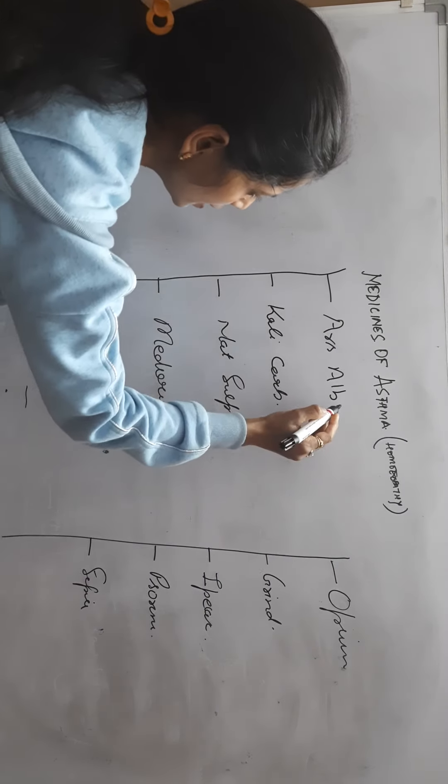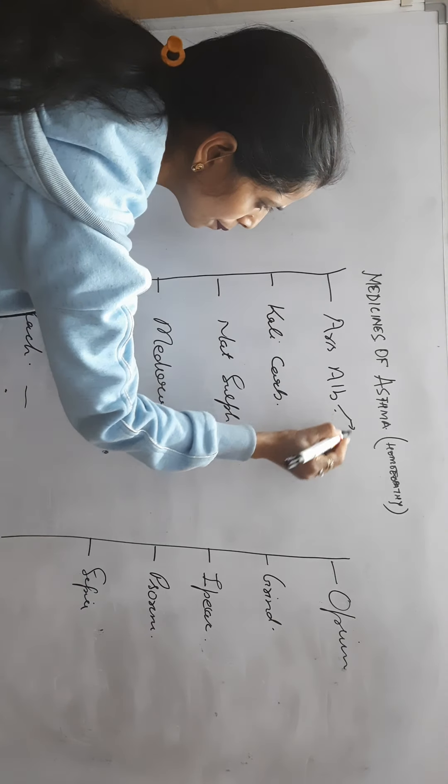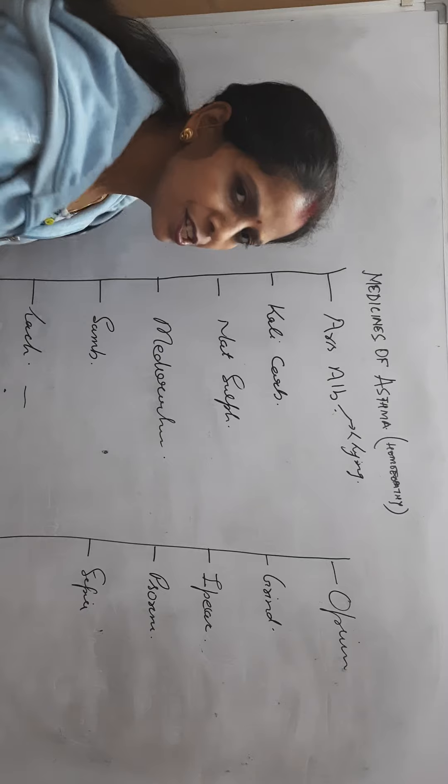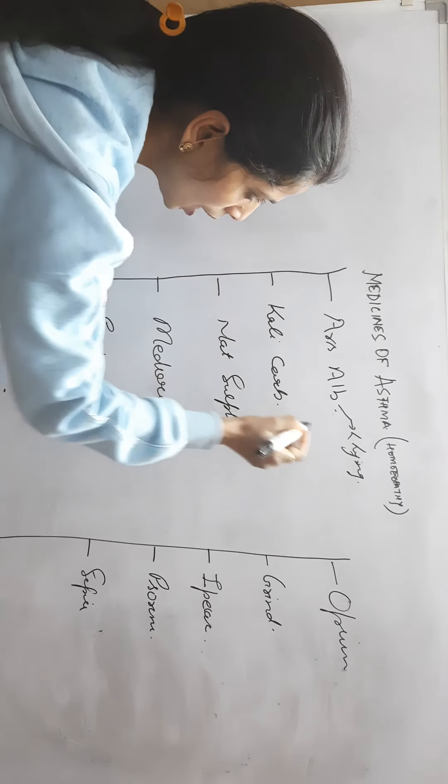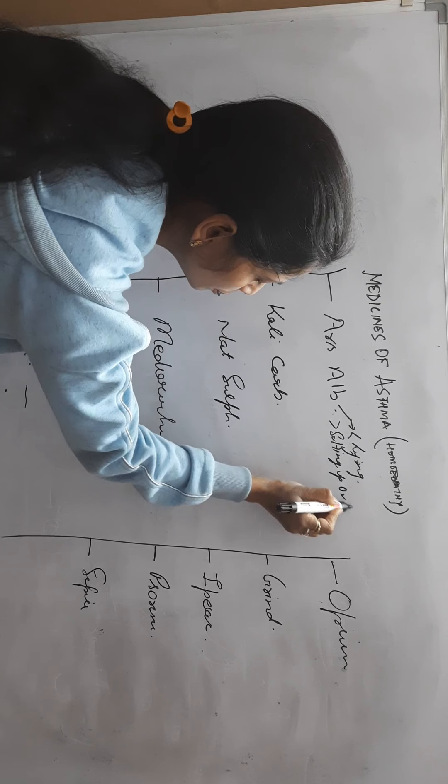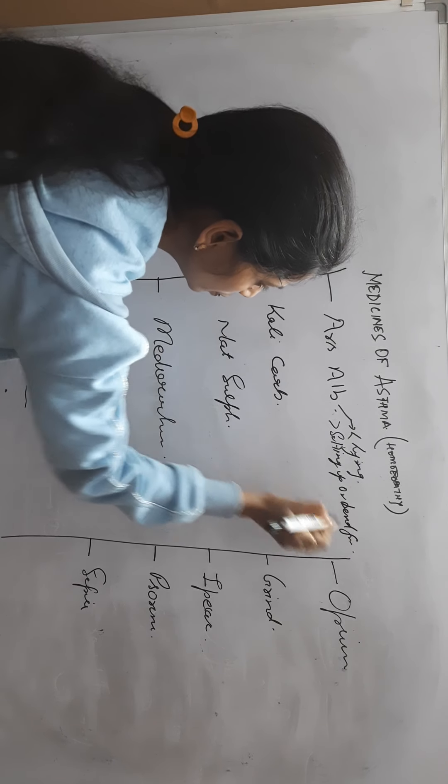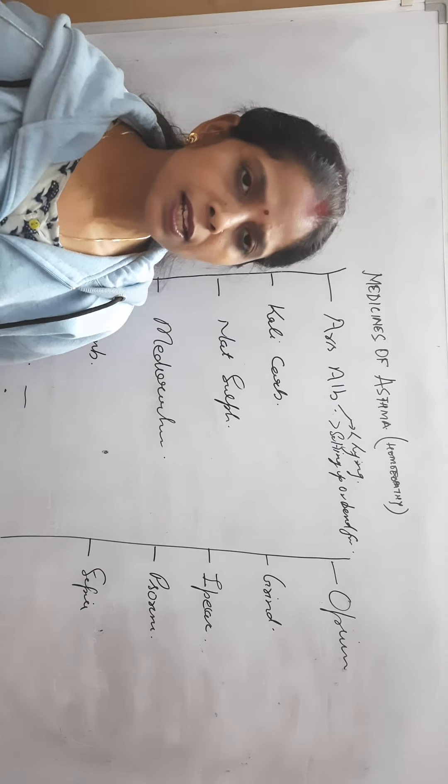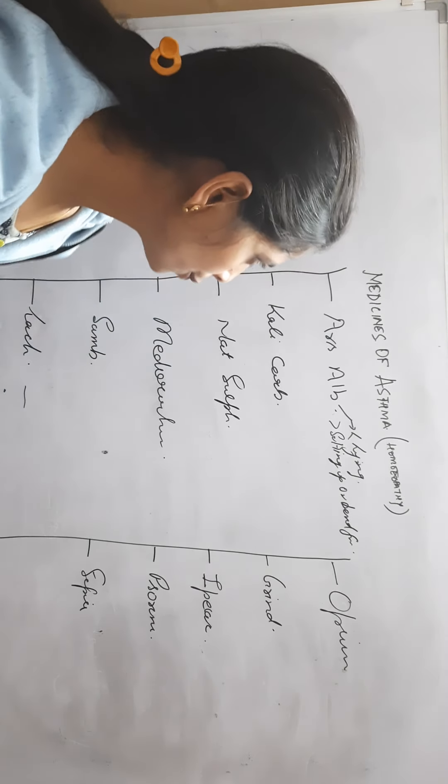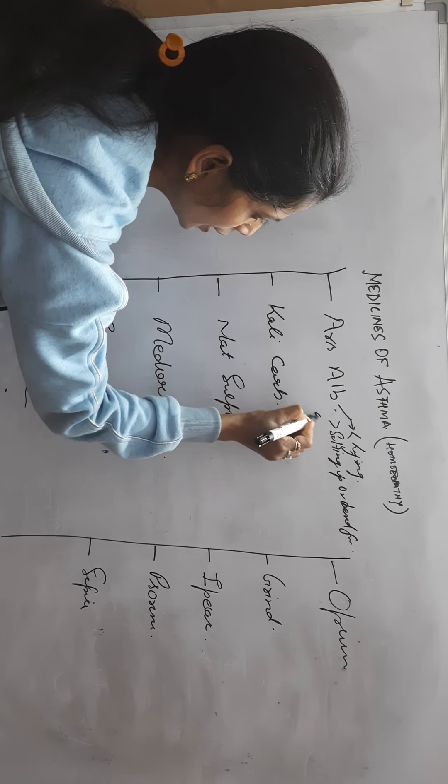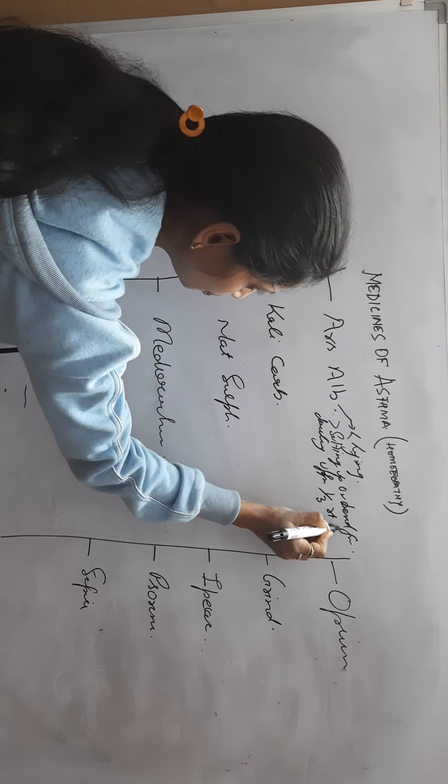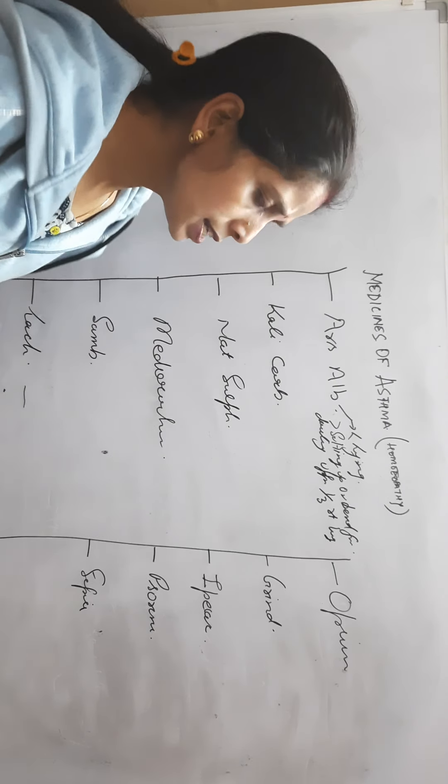In Arsenic, patient has aggravation on lying down. Patient is unable to lie down due to fear of suffocation. Amelioration by sitting up or bending forward. Here patient has darting pain in upper one-third of the right lung, and aggravation is after midnight.